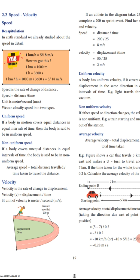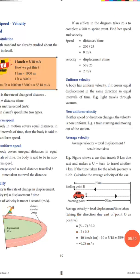One problem is given in your book. If an athlete takes 25 seconds to complete a 200-meter sprint event, find her speed and velocity. Speed equals distance divided by time: 200 divided by 25 equals 8 meters per second. Velocity equals displacement divided by time: 50 divided by 25 equals 2 meters per second.